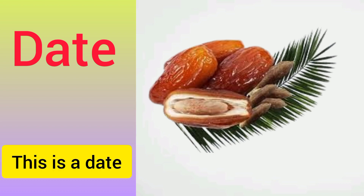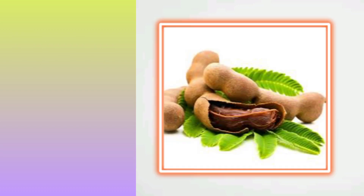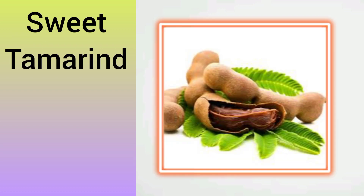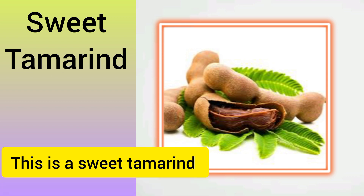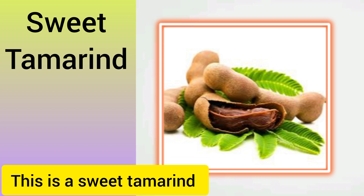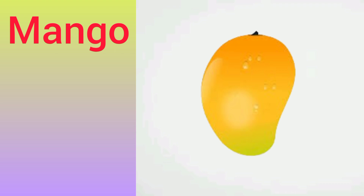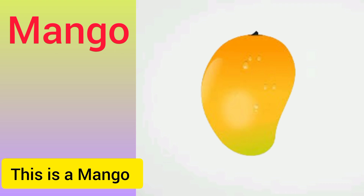Date. Date means Khojoor. This is a date. Sweet to Married. Sweet to Married means Emily. This is a Sweet to Married. Mango. Mango means Aam. This is a mango.